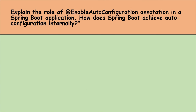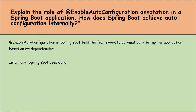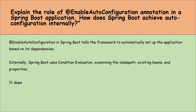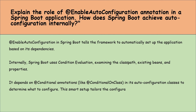Explain the role of the @EnableAutoConfiguration annotation in a Spring Boot application and how Spring Boot achieves auto-configuration internally. The @EnableAutoConfiguration annotation tells the framework to automatically set up the application based on its dependencies. Internally, Spring Boot uses conditional evaluation that examines the classpath, existing beans and properties. It depends on conditional annotations in its auto-configuration classes to determine what to configure. This smart setup makes configuration tailored to our needs, simplifying and speeding up the development process.